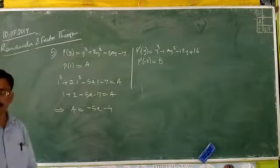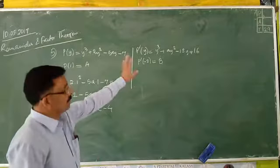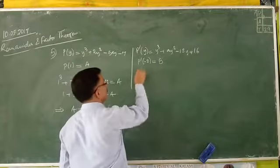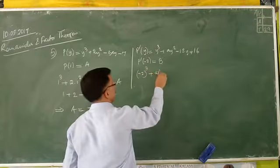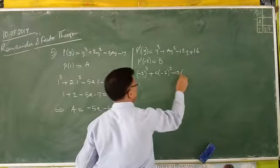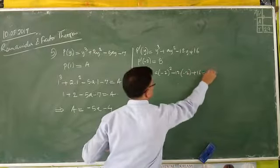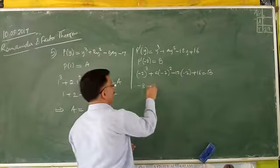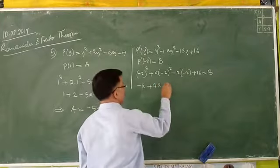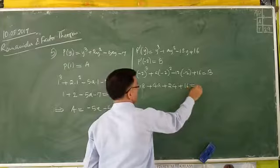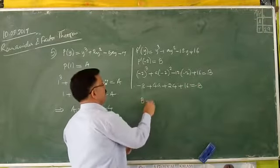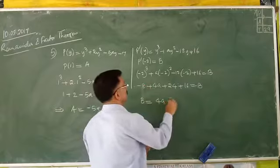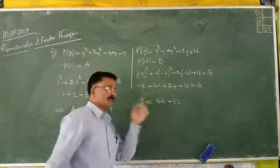For the second function P'(y) = y³ + ay² − 12y + 16, the divisor is y + 2, so y = −2, and the remainder is capital B. P'(−2) = −8 + 4a + 24 + 16 = B. So B = 4a + 32.